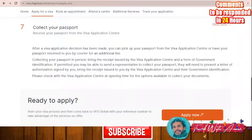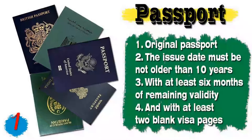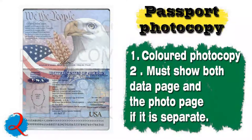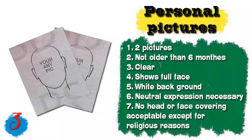In the next section, we will learn about all the required documents for the visa. The first document is your passport. The passport must be original, the issue date must be no older than 10 years, with at least six months of remaining validity and at least two blank visa pages for stamps. Number two, you will need a photocopy of your passport. It is recommended to be colored and must show both the data page and the photo page if they are separated. Number three, you will need personal pictures — two photos not older than six months, clearly showing the full face with a white background and neutral expression. No head or face covering is accepted except for religious reasons.